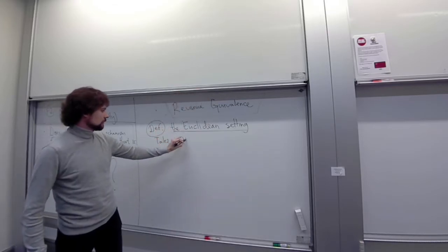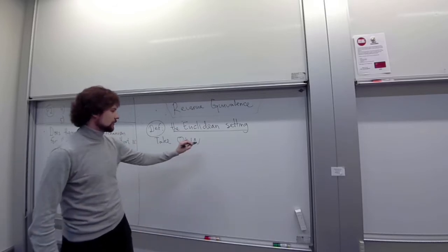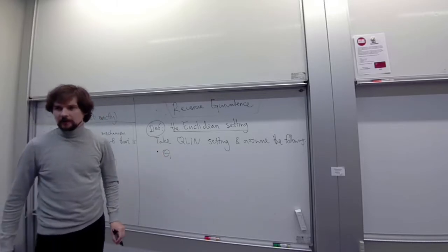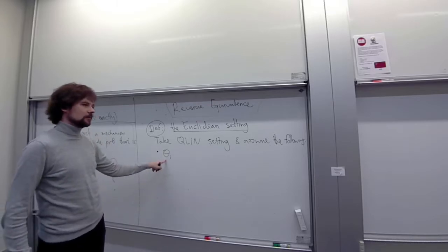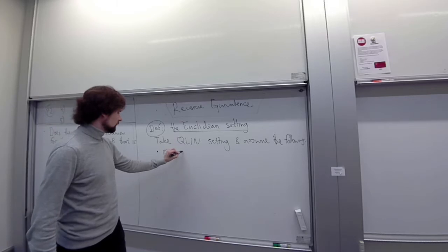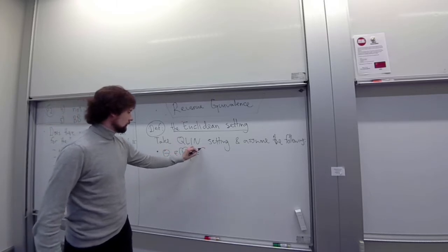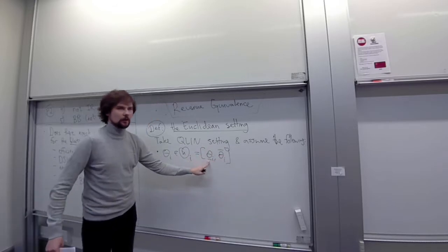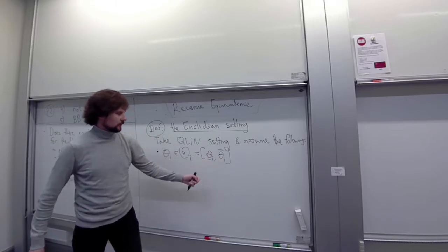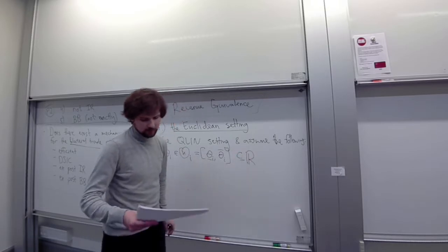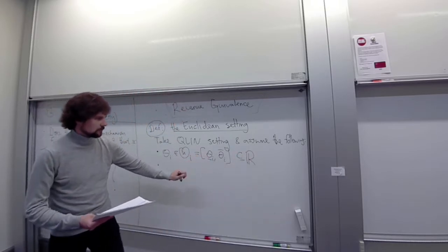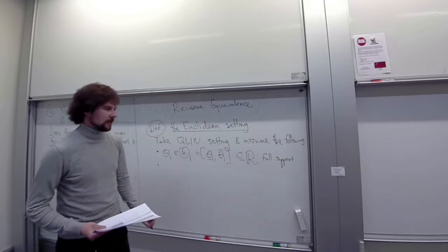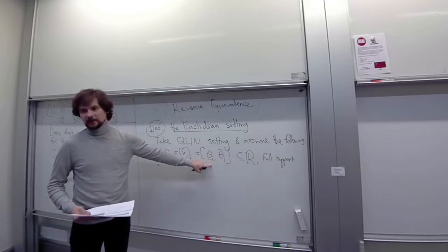You take the quasi-linear setting and add the following assumptions. First, we assume that all types belong to an interval — type is a single real number, not a vector. We say that every player's type should be between theta lower bar i and theta upper bar i, and there is full support, meaning each type occurs with positive density.